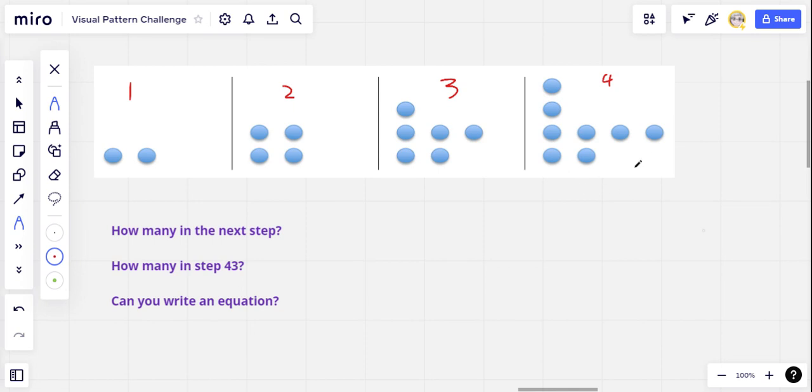And your challenge is to determine how many of these dots are going to be in step five. If you can do that, can you figure out how many in step 43? And can you write an equation that could be used to predict the number of dots in any step at all? So that's the challenge. If you'd like to accept it, pause the video and see what you can do.